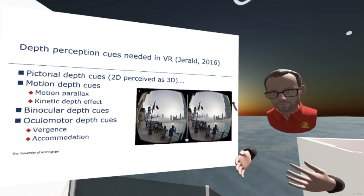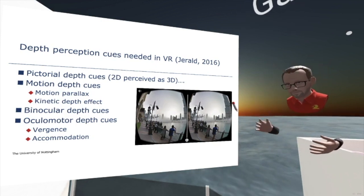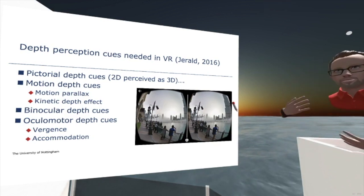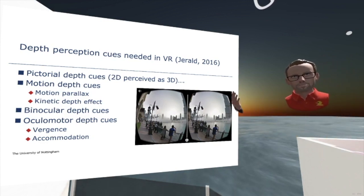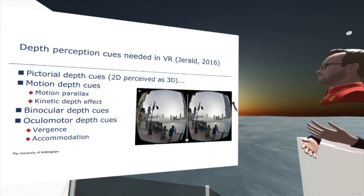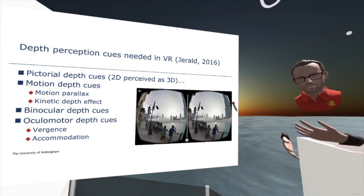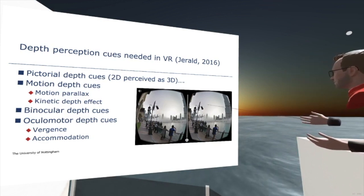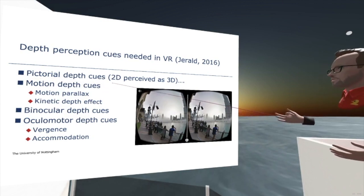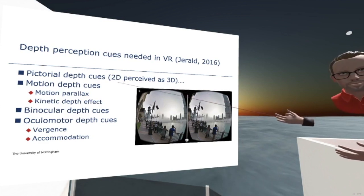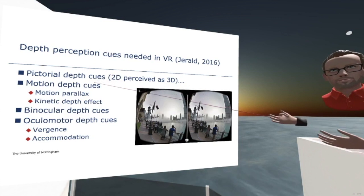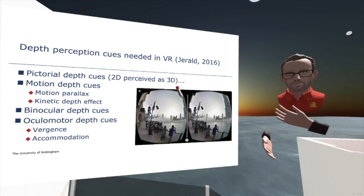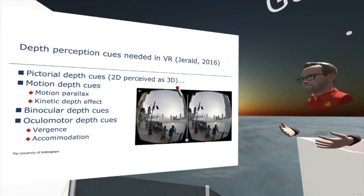The last couple of slides are about depth perception — what are all the different things that need to happen for me to perceive depth in a virtual world the way I might in the real world? The most obvious ones, when you're experiencing Notopia on a desktop computer or tablet, are pictorial depth cues. There are many of them to be exploited — these are 2D cues that get perceived as 3D, and they're really important in desktop-based VR. There are also cues associated with motion, or with wearing the headset.